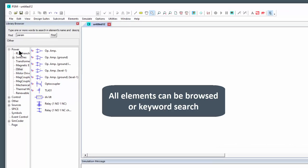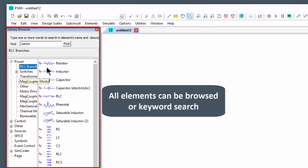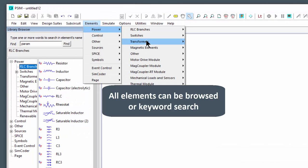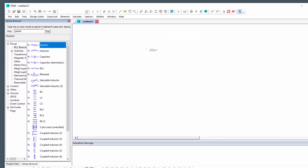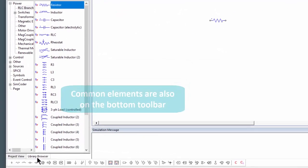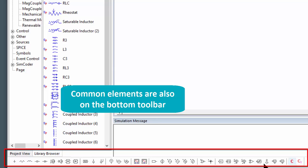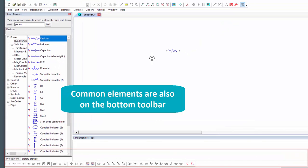Once we're here we need to place some components. So we can go into the library browser here or up into the Elements menu and poke around this way. Let's place a resistor for example. We can also come down to the bottom toolbar, there's some common components here, so here's a DC voltage source, so let's place that there.